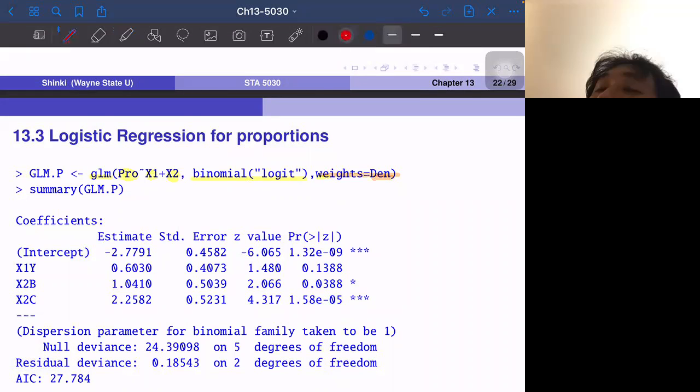So X1 have two values. So the baseline is X1 equal to N and X2 equal to A. And if X1 equals Y, how much higher the success probability is? And that probability is actually 0.6030. This does not mean the probability is 60% higher, but the coefficient of X1 of the indicator variable of X1 equals Y is 0.6. Then we have complicated the link function, inverse link function. But at least we can say that Y gives higher success probability than X.